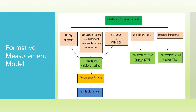In my previous video we discussed the indications of a formative construct: first, the theory or literature suggests the construct is formative; second, when items are asked in terms of causes, dimensions, or parameters; third, when composite reliability is less than 0.7 and average variance extracted is less than 0.5. Fourth and fifth, when no previous literature is available or we are indecisive whether the construct is formative or reflective.